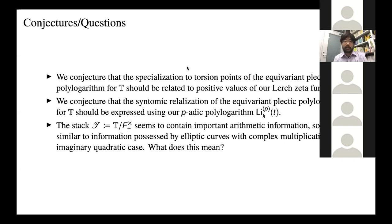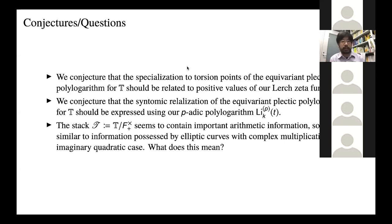A question was raised: can the Lerch zeta function be regarded as a constant term of an Eisenstein series? Probably yes — perhaps a Hilbert modular form, and then you degenerate to the cusps and get these tori. I haven't really thought about this carefully, but I would imagine something like that. That would be interesting.